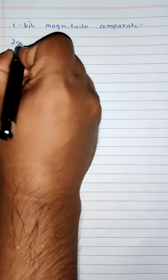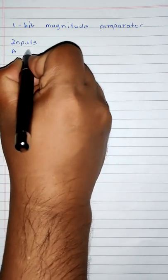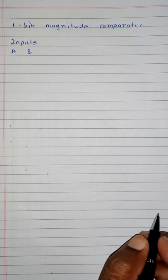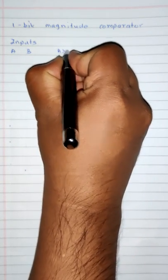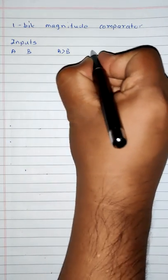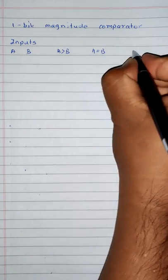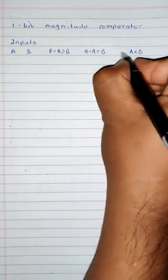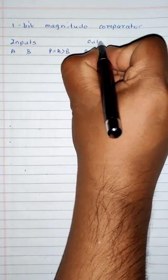Let's see the truth table of it. It will have two inputs A and B. Whenever we compare two inputs, there are only three possibilities of output: either A will be greater than B, A is equal to B, or A is less than B. Let's say these are our three outputs P, Q and R.